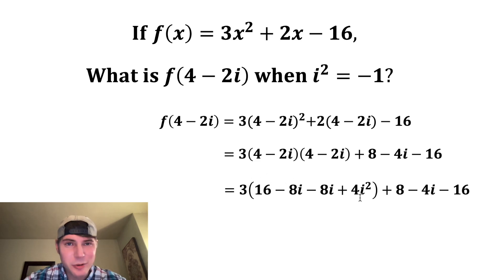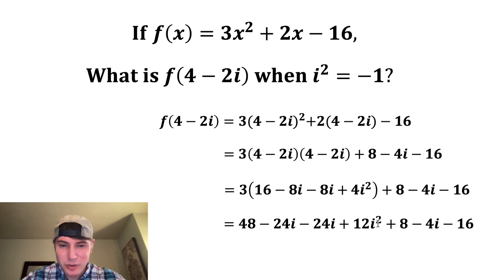And now we can distribute this 3 across all these terms. 3 times 16 is 48, 3 times -8i is -24i, 3 times another -8i is -24i again. And then 3 times 4i² is 12i². And then we can bring down the rest of this stuff. Up here, they reminded us that i² is equal to -1. So this i² here, we can change that to -1. And -1 times 12 is -12.